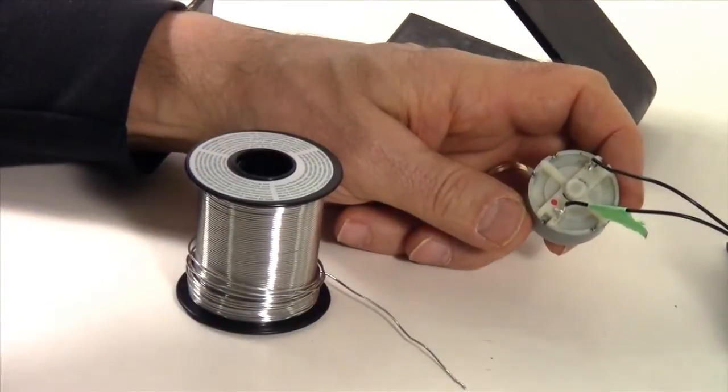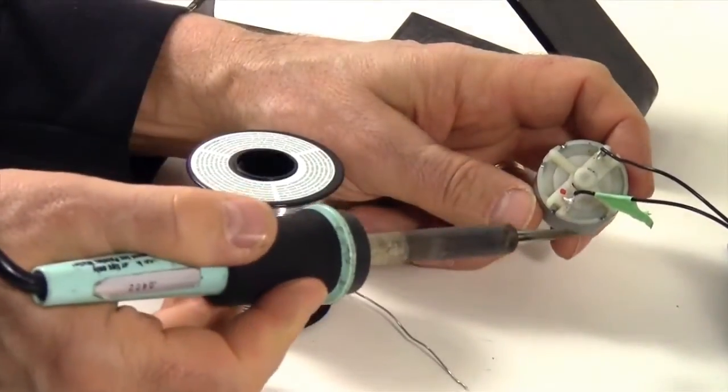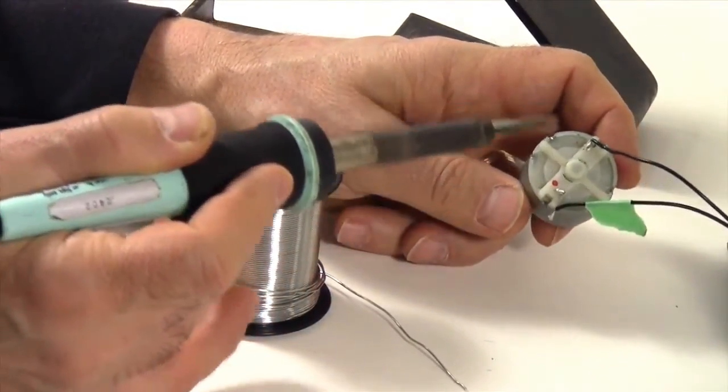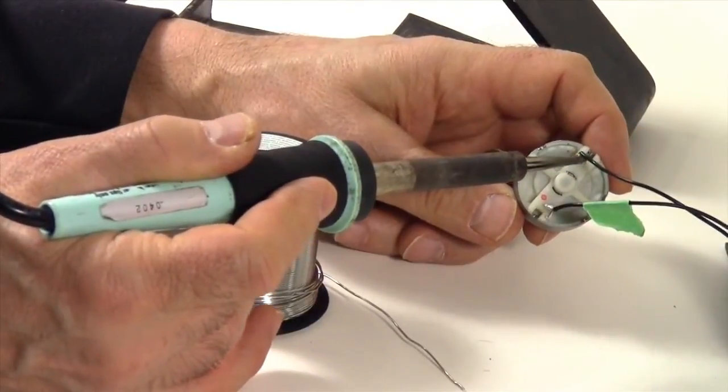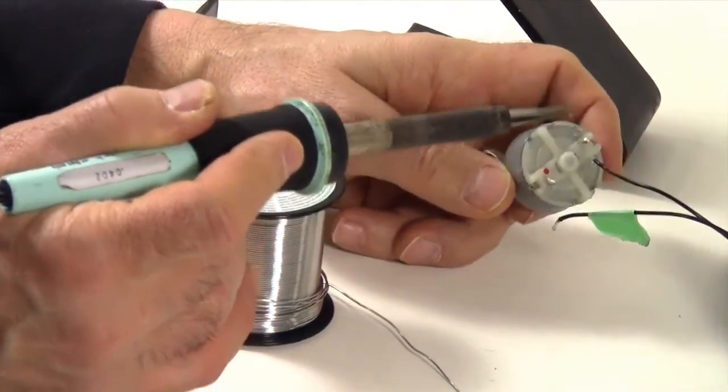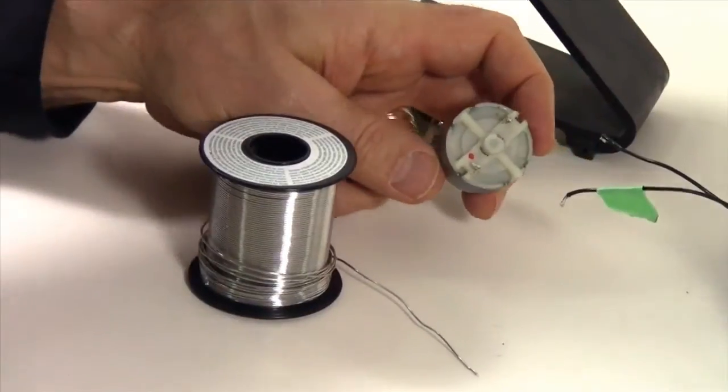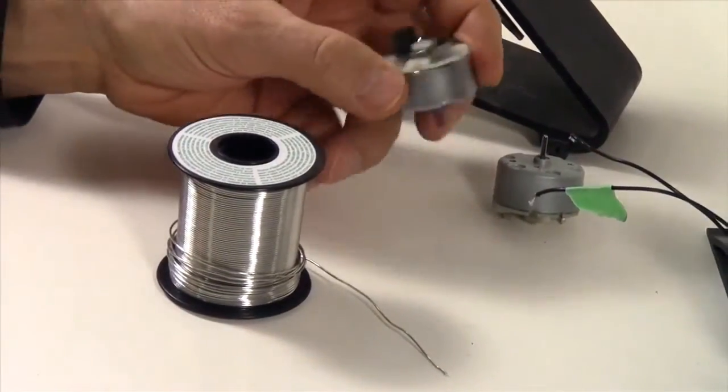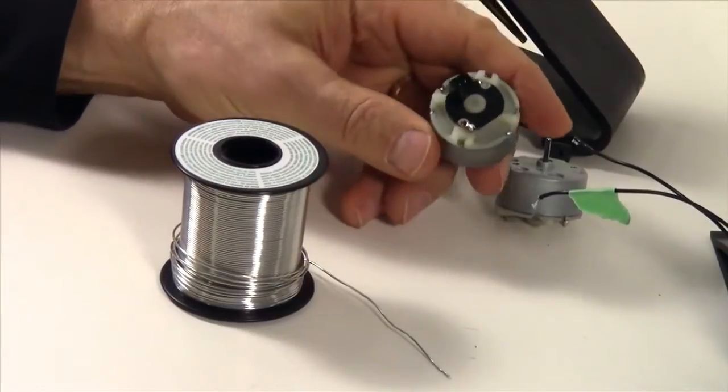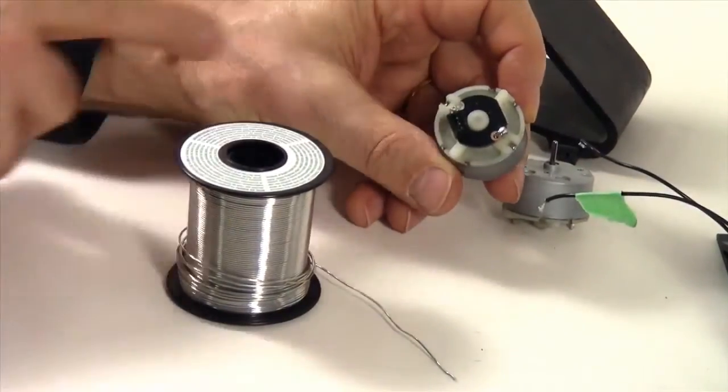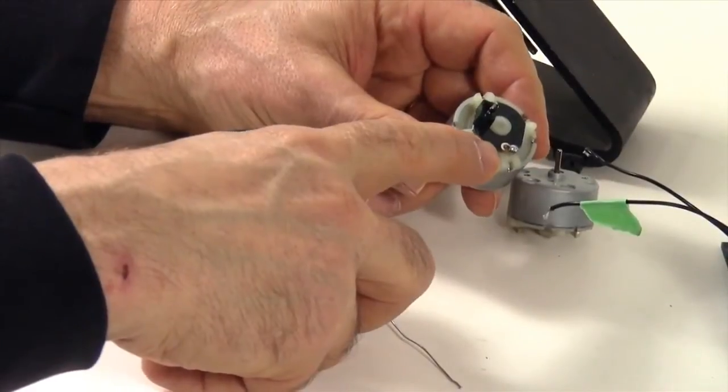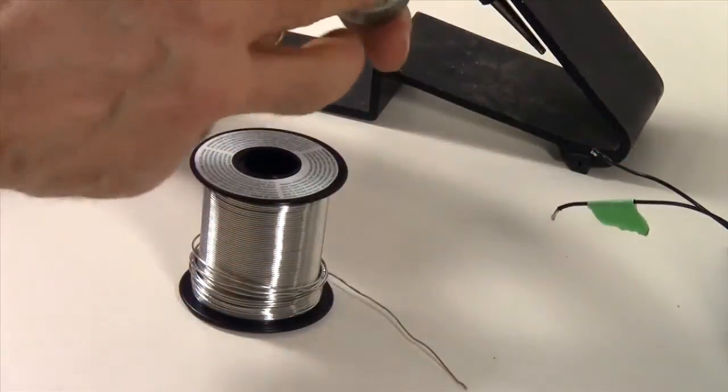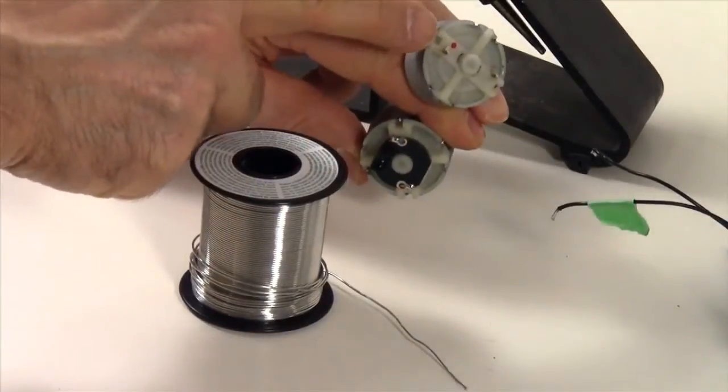Now we're going to use our soldering iron to remove or unsolder the wires and now we're going to take our new motor and we can see that this motor has a circuit board. But if we look closely inside that circuit board we can see that there's a red dot. So this red dot corresponds to this red dot.